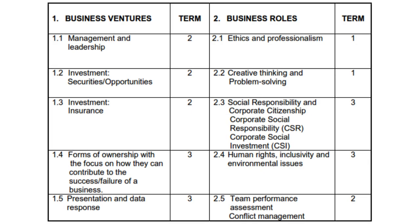For paper 2, our first module is business ventures which has five topics: management and leadership, investment, securities, investment, insurance, forms of ownership, and presentation and data response. The second module in paper 2 is business roles which also has five topics: ethics and professionalism, creative thinking and problem solving, CSR and CSI, human rights, inclusivity and environmental issues, and finally team performance assessment and conflict management. For paper 1 I prefer business operations because it has less content, and for paper 2 I prefer business ventures.